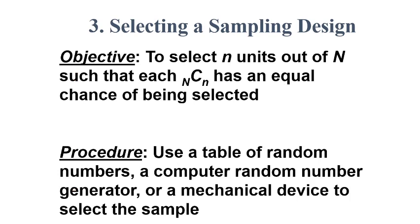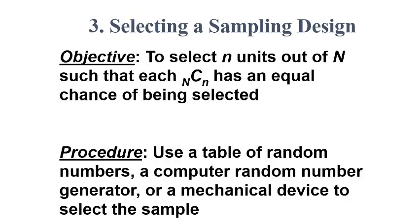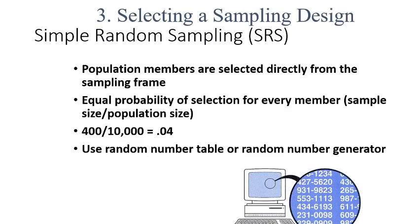The objective is to select n units out of N such that each combination (N C n) has an equal chance of occurrence. The procedure is to use a table of random numbers, computer-generated numbers, or a mechanical device to select the sample.